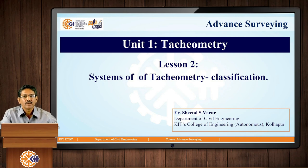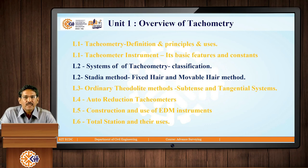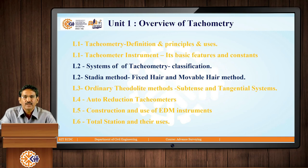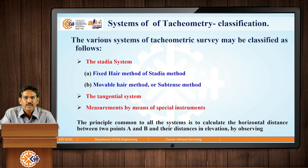We now move on to the systems of tachymetry and learn more about the types. In this lecture, we will be focusing on systems of tachymetry and the stadia method, which are also the subsystems of the tachymetric methods. We will also be looking at the movable hair method. First, we will be looking at the various types or classifications.